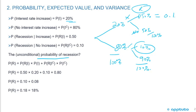So that's going to be 0.8 times 0.1 and that's going to give us 0.08. So the probability, the unconditional probability of a recession is going to be 18%.